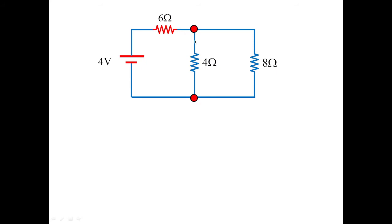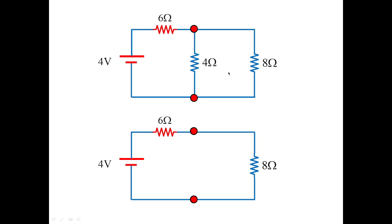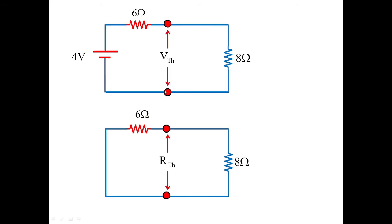We keep the 4-ohm load aside and at those two terminals find Vth and Rth. To find Vth, we obtain the open-circuit voltage across the 8-ohm resistor using the voltage divider rule: V across 8 ohms equals Voc equals Vth equals the total voltage 4 multiplied by 8 divided by the sum of the two resistances (6 plus 8), giving Vth equal to 2.286 volts.